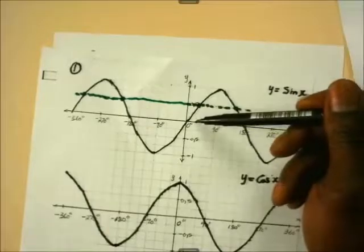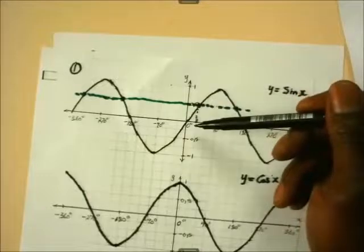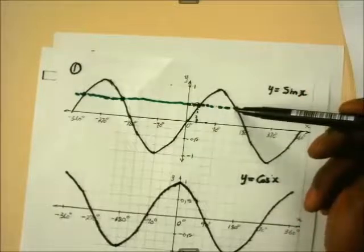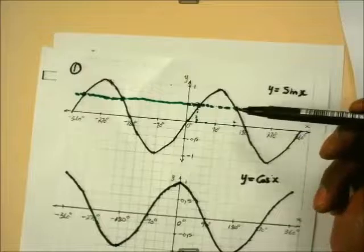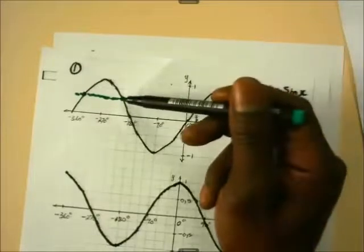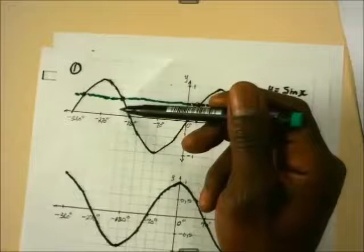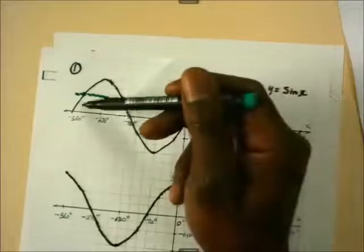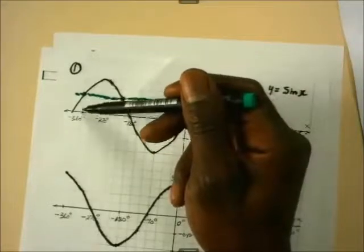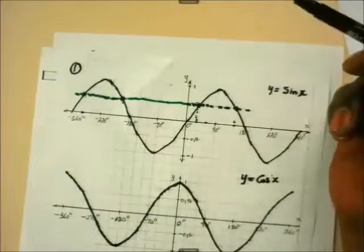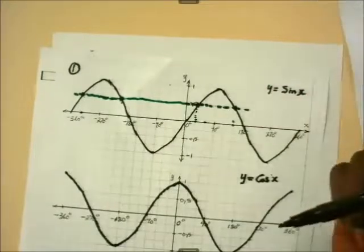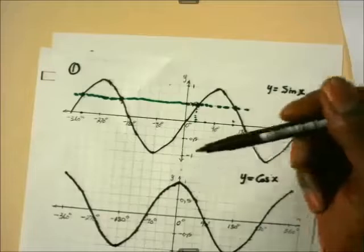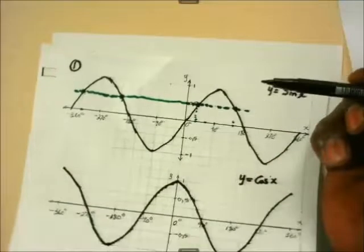How do we get the general solution for the problem sin x equals 0.5? We are going to write it sin x equals 0.5. If we look at our graph here, we can estimate the solutions for that. I've actually drawn this graph so that I'm having the multiples. I've used the square grid, and I've used the multiples of 30 degrees.